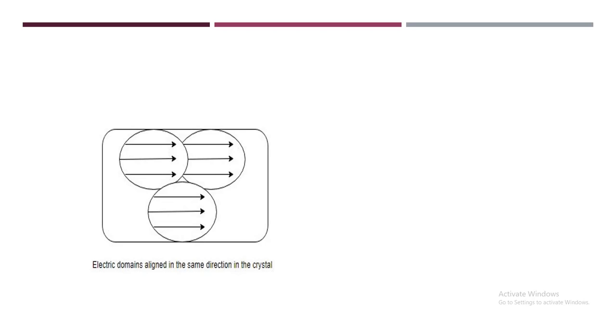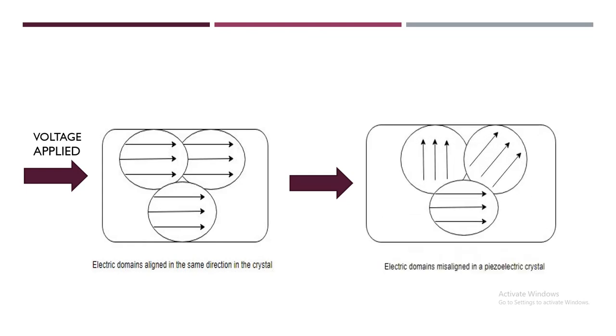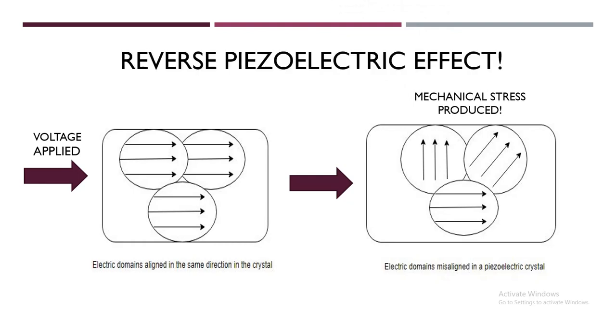For reverse piezoelectric effect, what scientists did was that they applied voltage to the piezoelectric crystal. And on applying voltage, this piezoelectric crystal has all the electric domains aligned in the same direction. So when you apply voltage to them, all of these electric domains misalign and mechanical stress is produced. This is known as reverse piezoelectric effect.